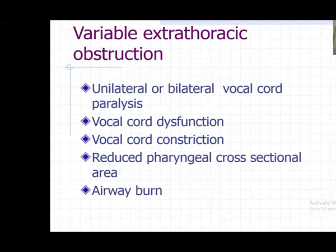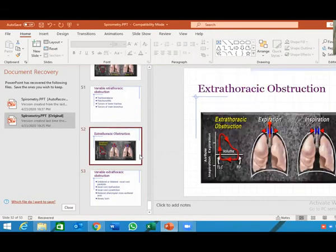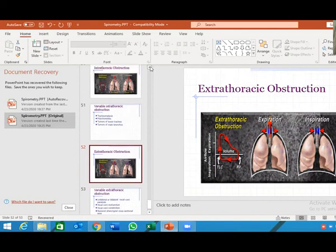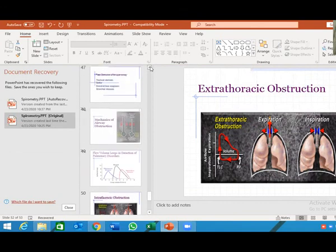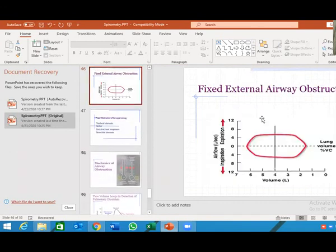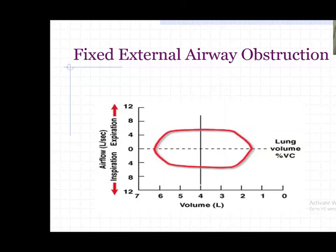Causes of variable extrathoracic obstruction include vocal cord paralysis, vocal cord dysfunction, vocal cord restrictions, and reduced pharyngeal cross-sectional area. All these airway conditions cause variable extrathoracic obstruction, seen as flattening of the inspiratory loop. By examining the shape of the flow volume loop, you can determine where the obstruction is and whether it is variable or fixed. In fixed obstruction the loop is flattened both during inspiration and expiration.